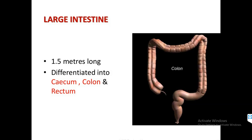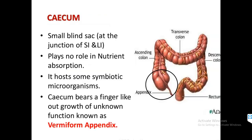The length of the large intestine is 1.5 meters and it is differentiated into three parts: the cecum, the colon, and the rectum. The cecum is a small blind sac present at the junction of the small intestine and large intestine — that is, just where the small intestine ends and the large intestine starts.